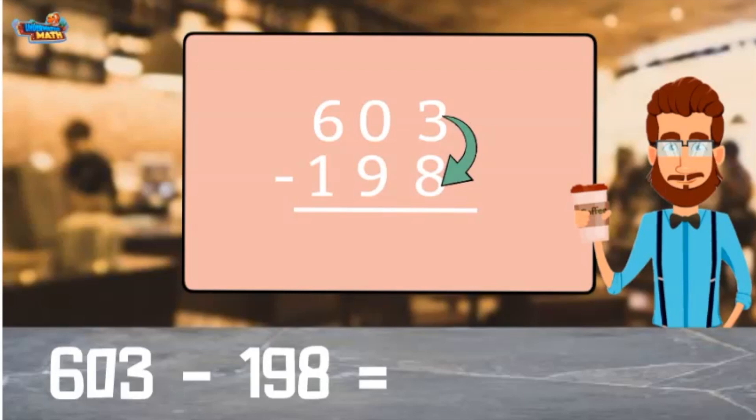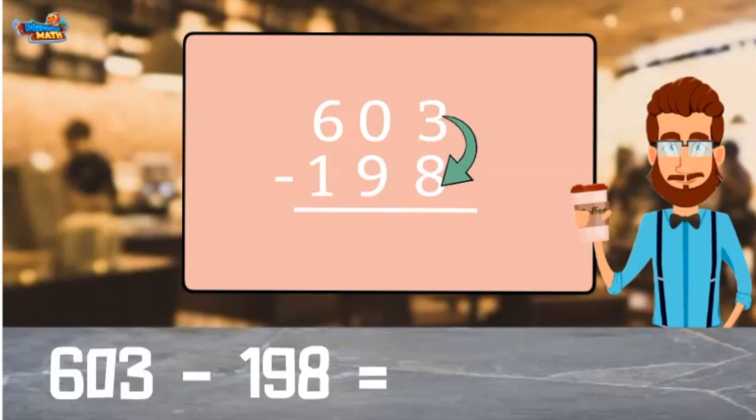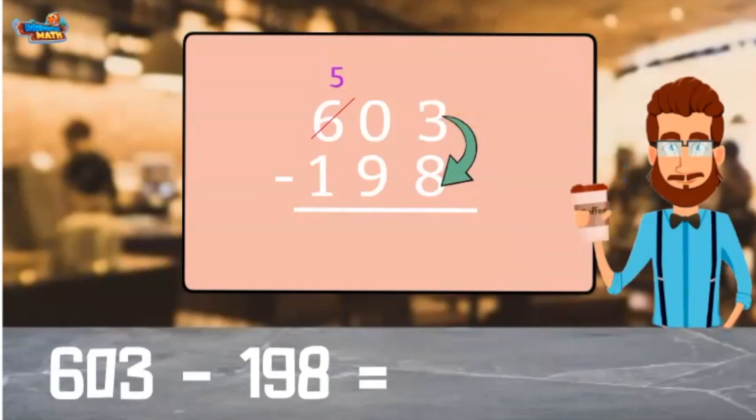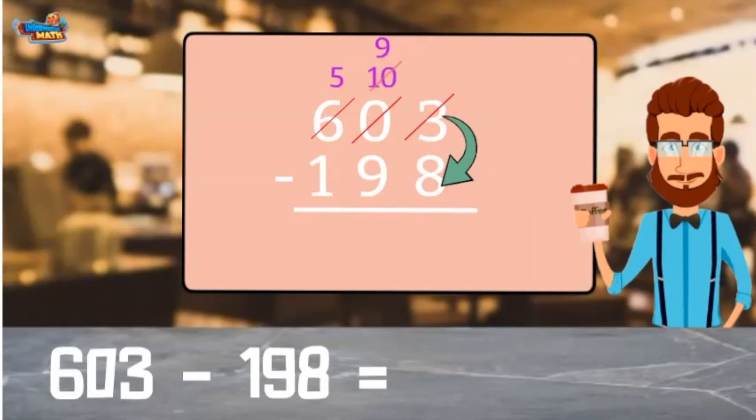Oops. The tens place has 0. I have to borrow from the hundreds place. I cross out the 6 to make it a 5. Then cross out the 0 and make it a 10 because we just borrowed 10 groups of 10. Since we still need to borrow from the tens place, we cross out the 10 and make it a 9. We cross out the 3 and make it a 13.